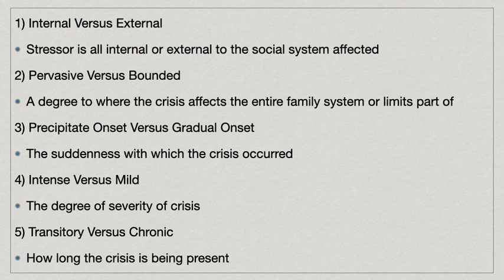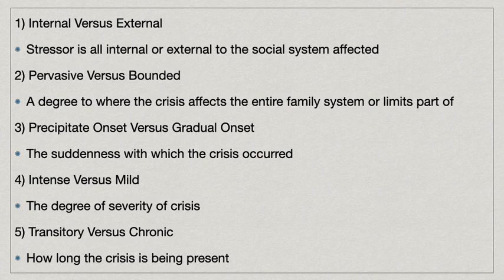The first stressor type is internal versus external, meaning a stressor is either internal or external to the social system affected. Internal examples could be feelings or expectations a family may have, while external examples include a toxic environment, getting injured, or financial stress. Number two is pervasive versus bounded, which is the degree to which the crisis affects the entire family system or a limited part. Number three is precipitate onset versus gradual onset, which is the suddenness with which the crisis occurred — either happening without warning, or gradually over time.